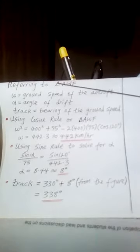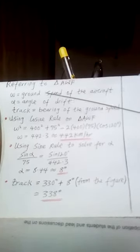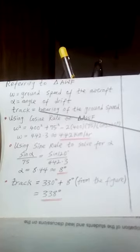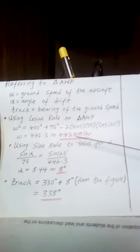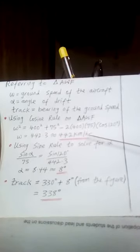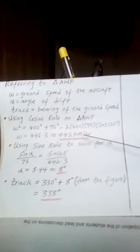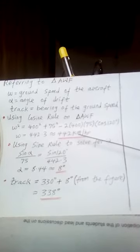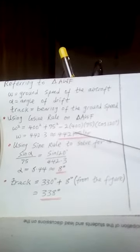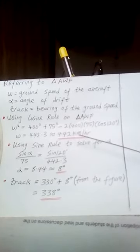This calculation goes as follows. Referring to triangle AWF, using the cosine rule, we are going to find that W is 442 km per hour. You can see that the wind speed has been enhanced from 400 km per hour to 442 km per hour, meaning that the wind speed actually enhanced the speed of the aircraft.